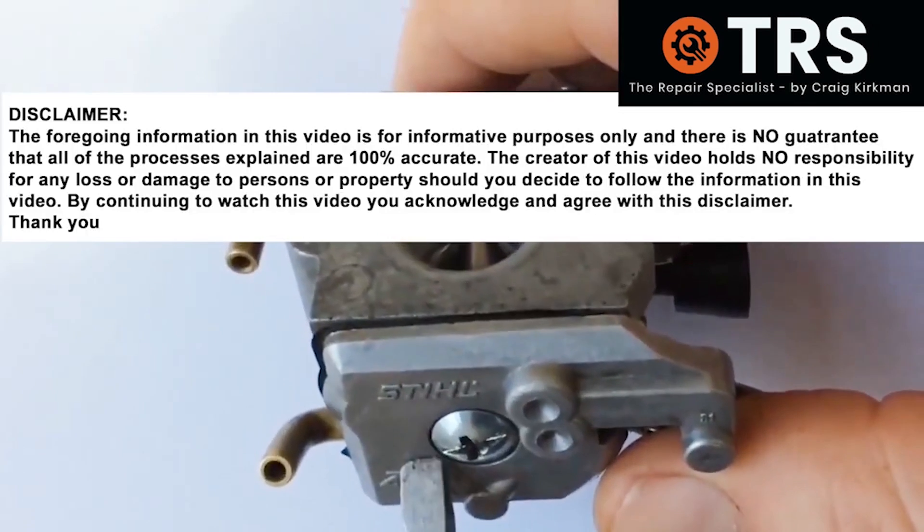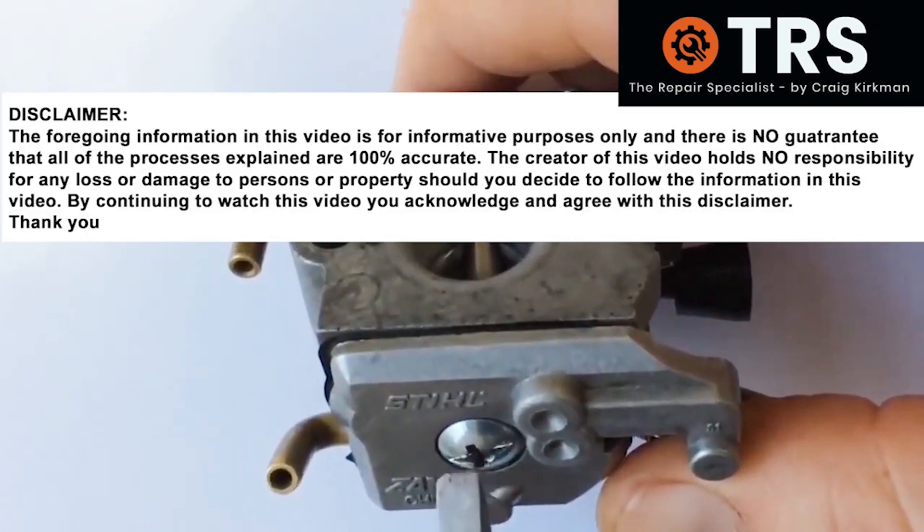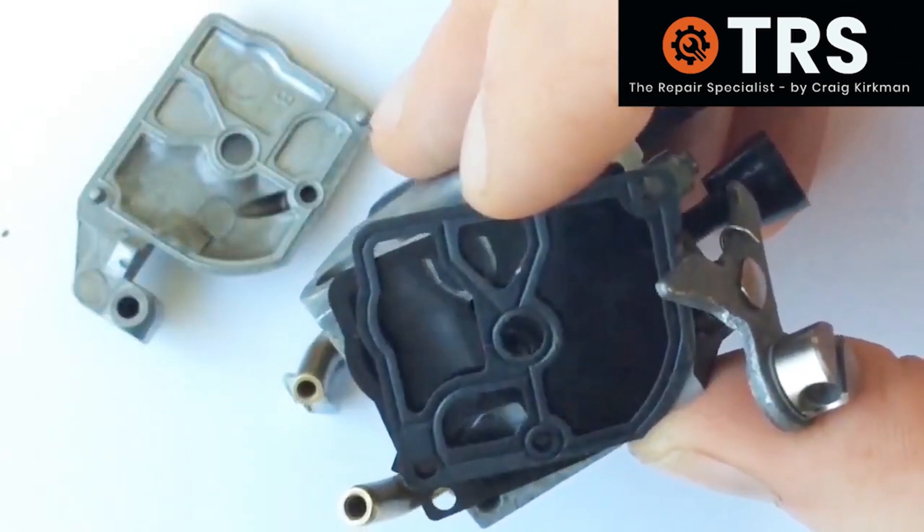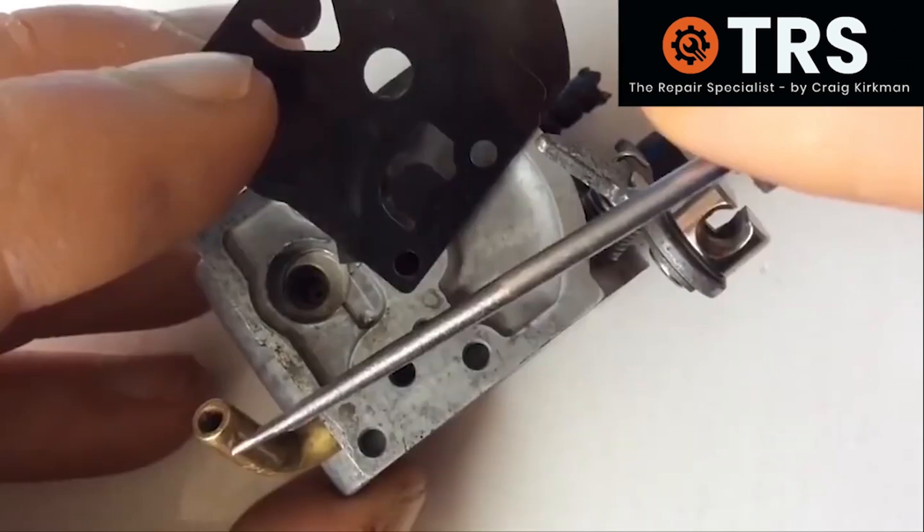Right, so I'm first going to take off the cap here and that'll expose the fuel pump diaphragm. So here is the diaphragm with the gasket. Now let's take a look at how all of this works.